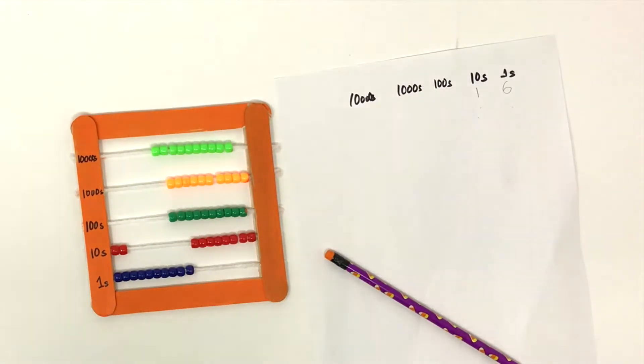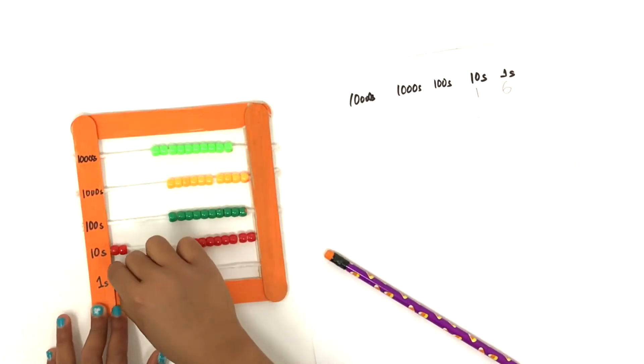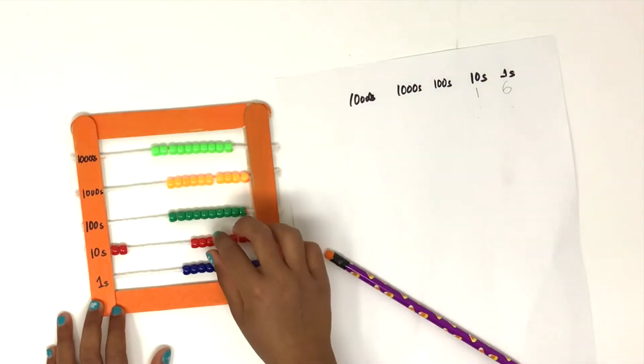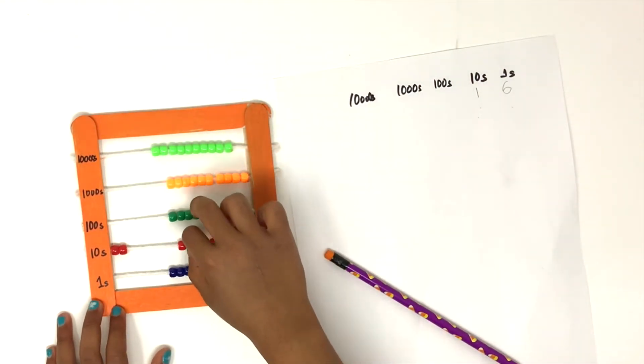Oh no, oopsie. At 4, we ran out of beads. So when we ran out of beads, what do we do? We push all the beads on the bottom row to the right and push 1 bead from the top row in the tens place to the left.